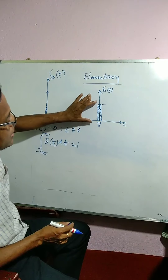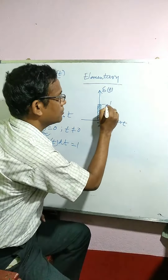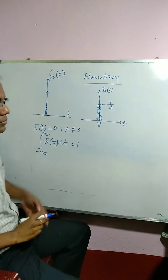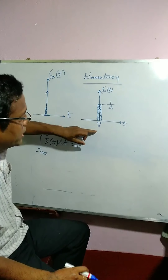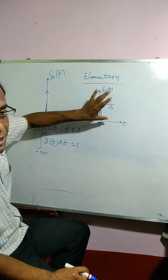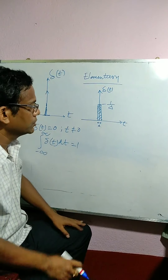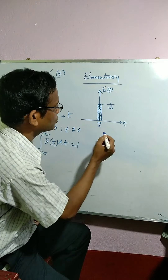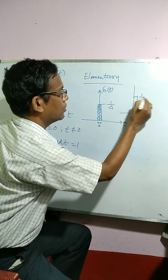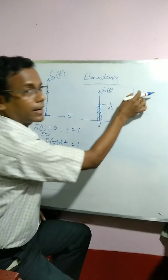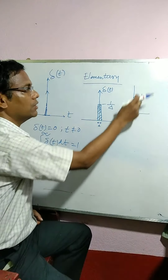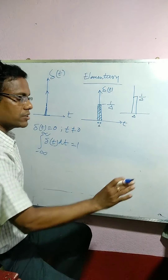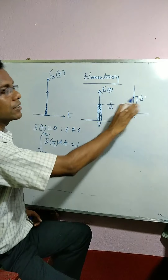This rectangle is represented by 1 by delta. Therefore, what is the area? The width is delta and the length is 1 by delta, therefore the area becomes 1. In some books it is also considered that you start from 0 onwards. In the same way, the width is delta and height is 1 by delta. The convention is that the area under the curve should be 1.